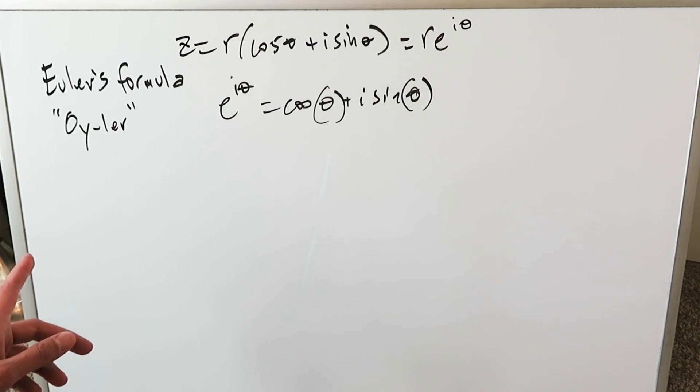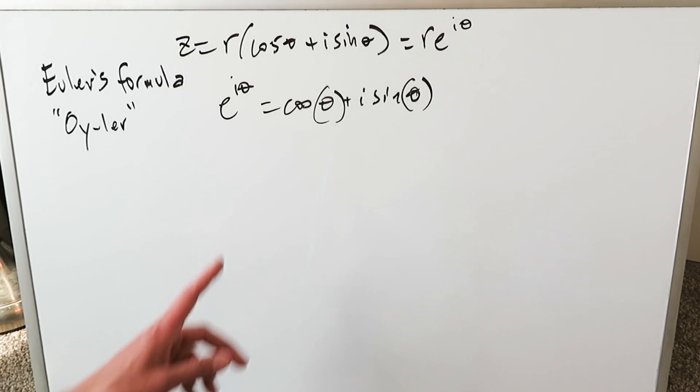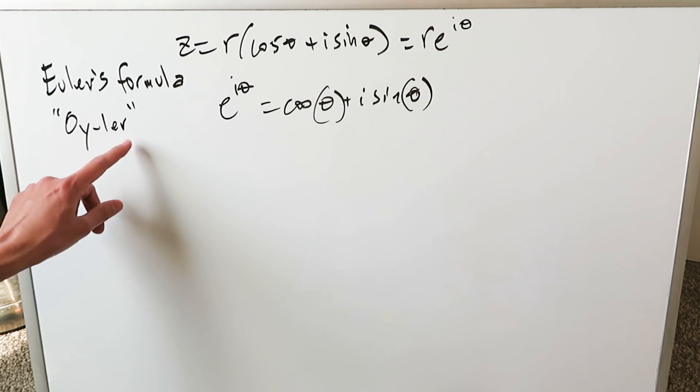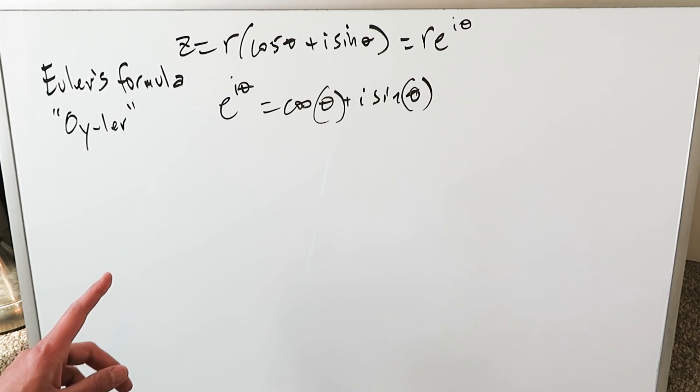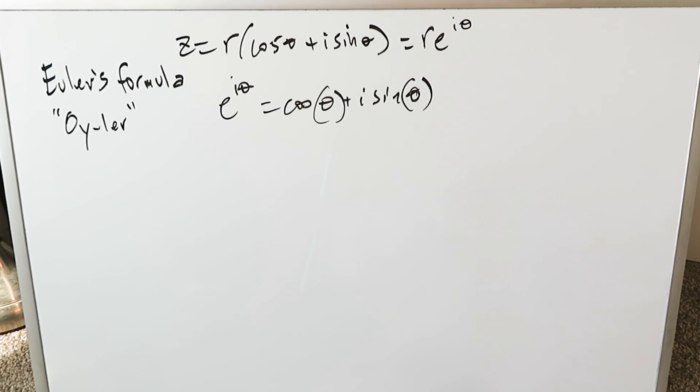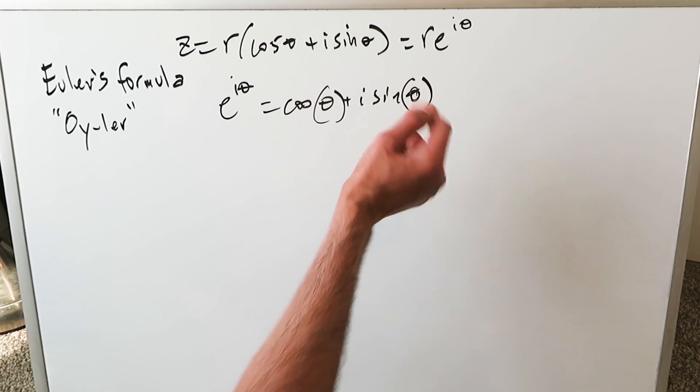Everything is stemming from Euler's formula which you have before you. This name here, the Swiss mathematician's name is pronounced as Euler. We are looking here at a complex number representation: r times cosine theta plus i sine theta is equal to r times e to the power of i theta.